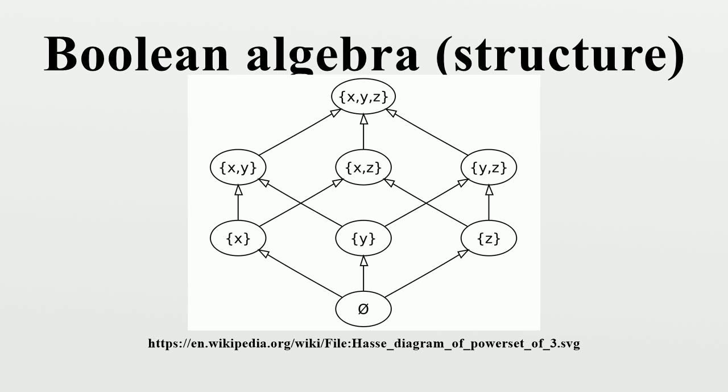However, the theory of Boolean rings has an inherent asymmetry between the two operators, while the axioms and theorems of Boolean algebra express the symmetry of the theory described by the duality principle.